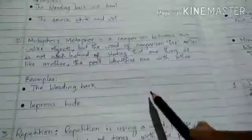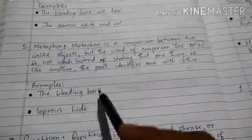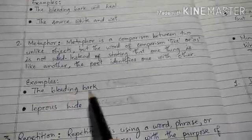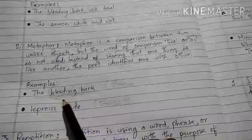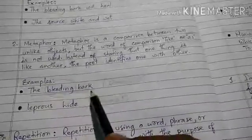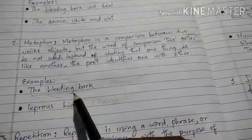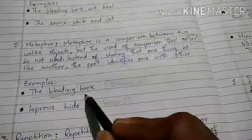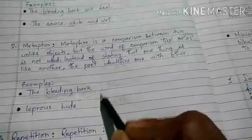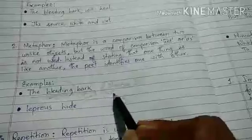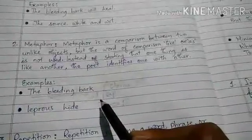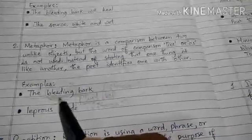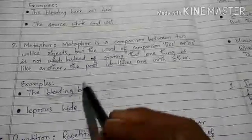In stanza 2, 'the bleeding bark' is an example of metaphor. The word 'bleeding' is used as a metaphor where bleeding is compared with the fluid or sap — a liquid substance that comes out when we cut trees — and 'bleeding' is used to compare with blood, like when any part of our body is cut.